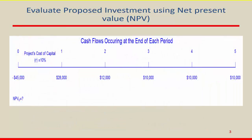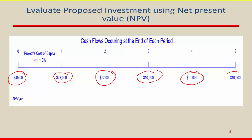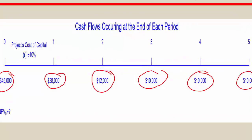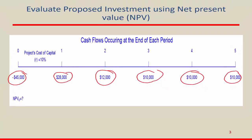Here's a simple example. A project requires 45,000 of investment at the beginning — today — and it generates cash flows over the next five years: 28,000 in year one, 12,000 in year two, 10,000 in year three, 10,000 in year four, and 10,000 in year five. After that the project is gone, with no salvage value. We also suppose the cost of capital is 10% — meaning you are paying 10% interest on the capital you borrowed to invest in this project.